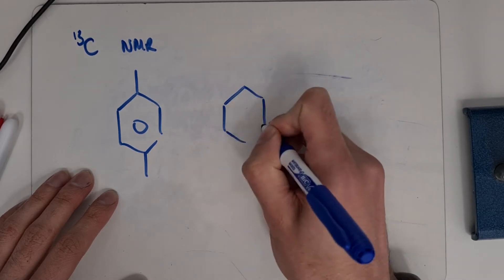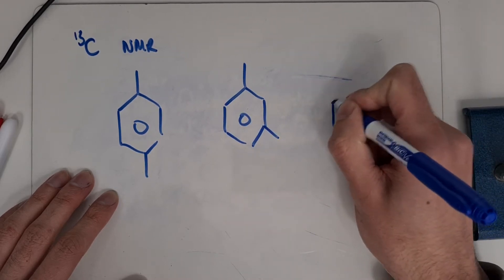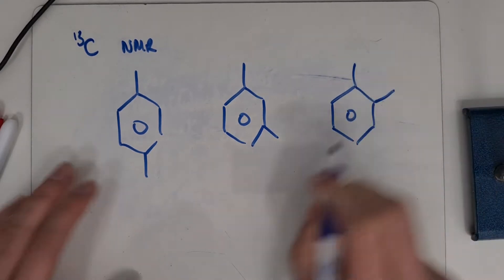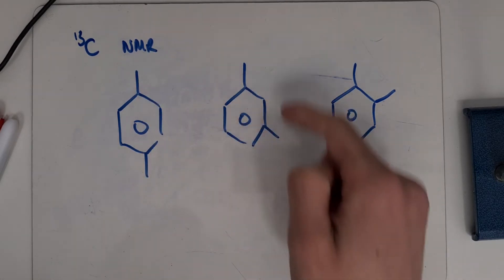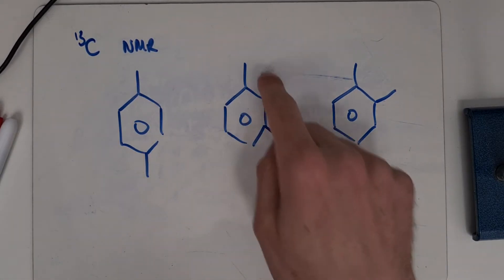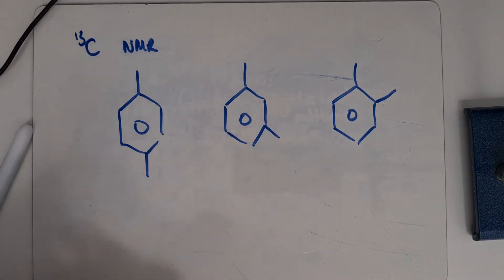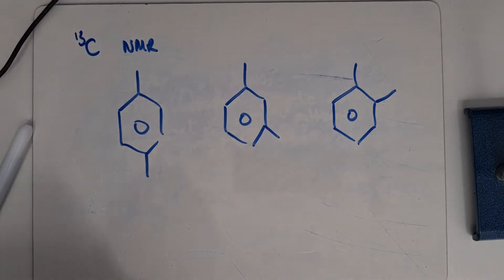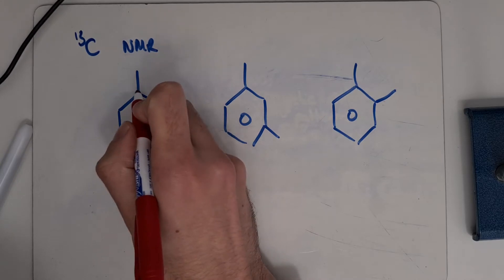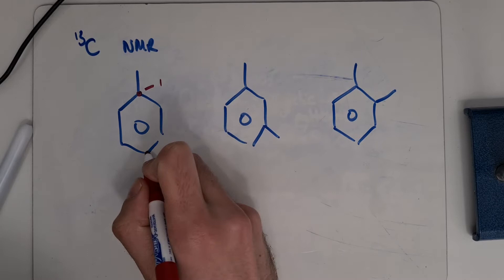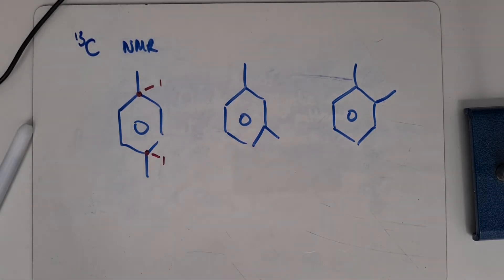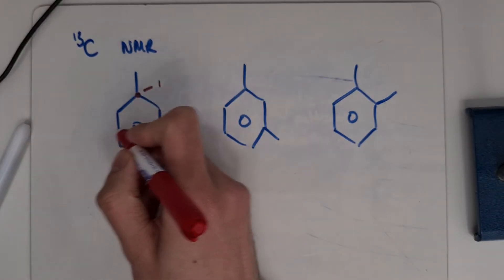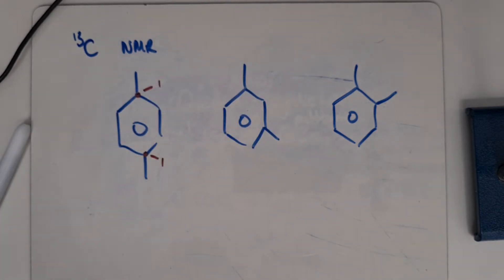I've got the three different positions and it's worth looking at the different environments that develop. I'm going to assume both methyl groups are attached — if they're different groups it changes slightly. In the para position, our 1,4 position, environment 1 here is identical to this environment here. They're both bonded to exactly the same thing — you've got a mirror image of each other. If you draw a plane straight across the middle, they'll be identical on either side.